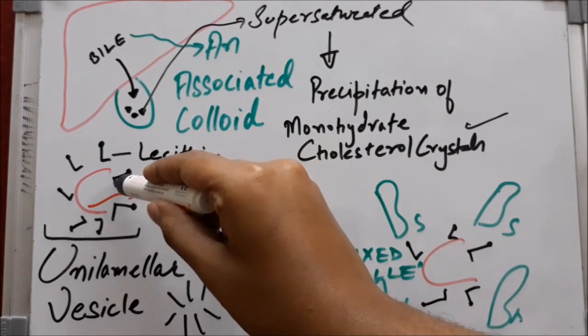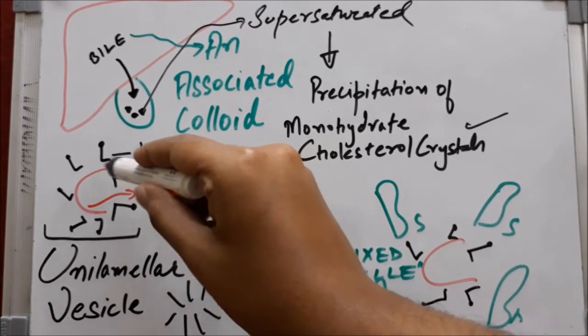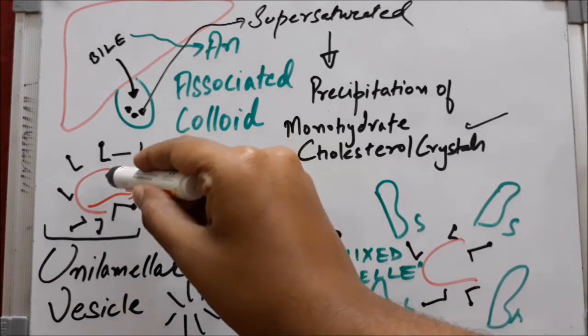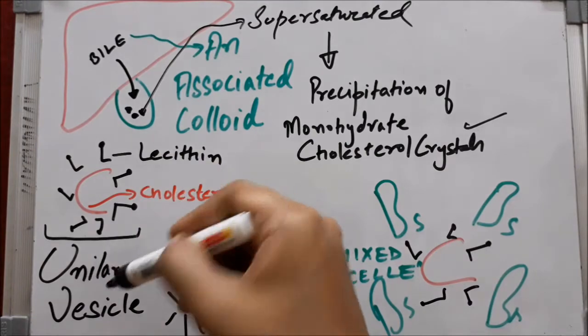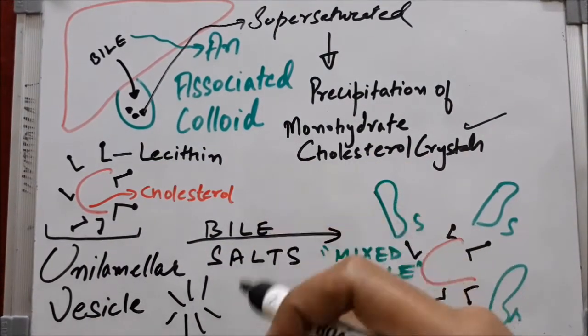...and the inner part is hydrophobic, which binds with cholesterol, as cholesterol is also hydrophobic. It forms a micelle-like structure known as a unilamellar vesicle. After combining with bile salts, its property changes and it makes a mixed micelle.